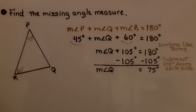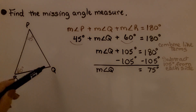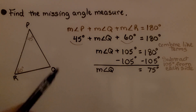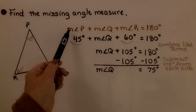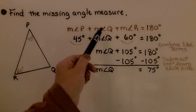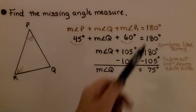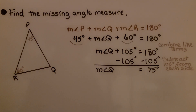Now let's find the missing angle measure of triangle PQR. We're given that angle P is 45 degrees and angle R is 60 degrees, but we don't know angle Q. We write our equation: the measure of angle P plus the measure of angle Q plus the measure of angle R is equal to 180 degrees.